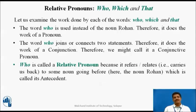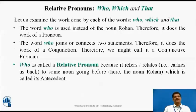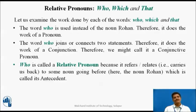Let us examine the work done by each of the words who, which and that in the above sentences. The word 'who' is used instead of the noun Rohan. Therefore, it does the work of a pronoun. The word 'who' also joins or connects two statements, so it does the work of a conjunction — therefore we might call it a conjunctive pronoun. 'Who' is called a relative pronoun because it refers or relates, i.e., carries us back to some noun going before — here the noun Rohan — which is called its antecedent.